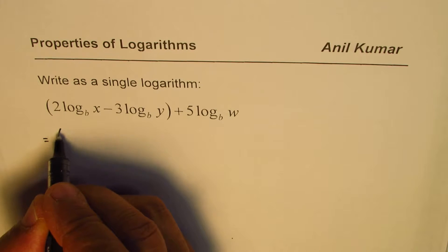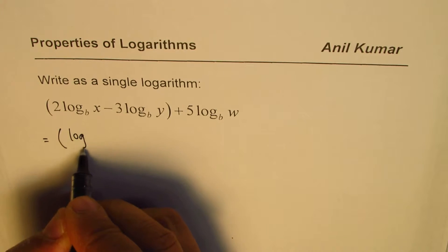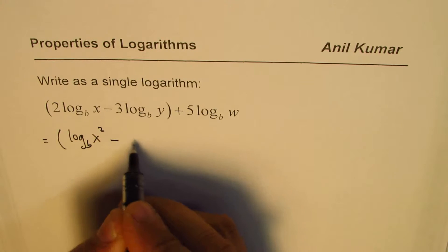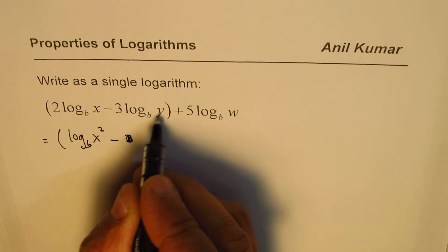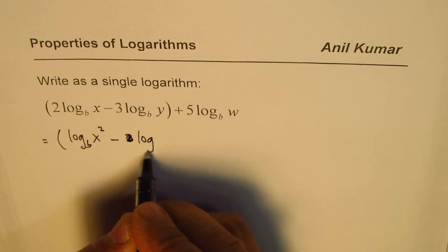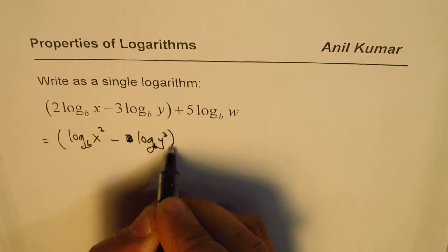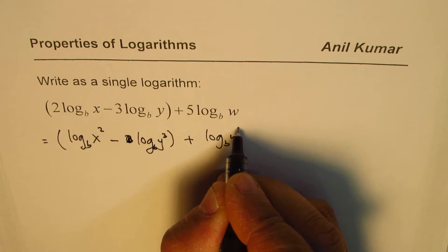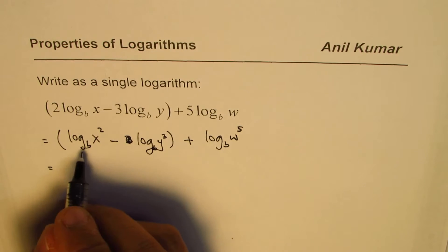First, let me write this as within brackets log to the base b of x squared minus 3, I will make this y cubed, log to the base b of y cubed, bracket close, plus log to the base b of w to the power of 5. And now we will apply the property.